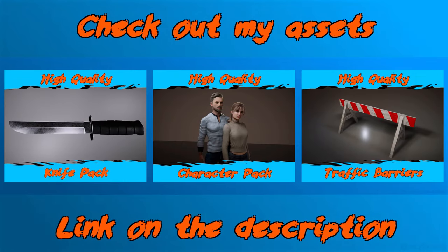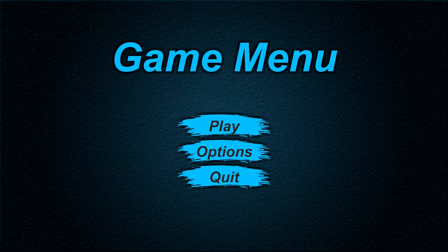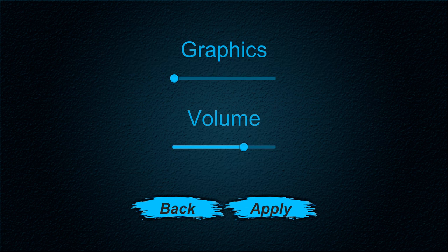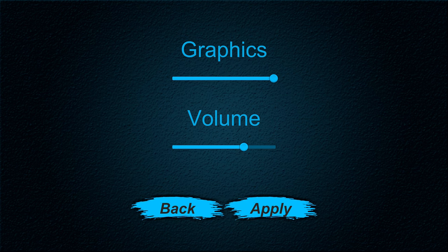Hello guys, welcome back to the channel. I'm Thunder and today we're going to be creating an options menu for our game. You can see here I have an options button and when I click on it, it displays the menu. Here are my volume and graphics settings and I can move them around — I can lower the volume and when I click apply, you can hear it actually applies. So let's go ahead and get started.